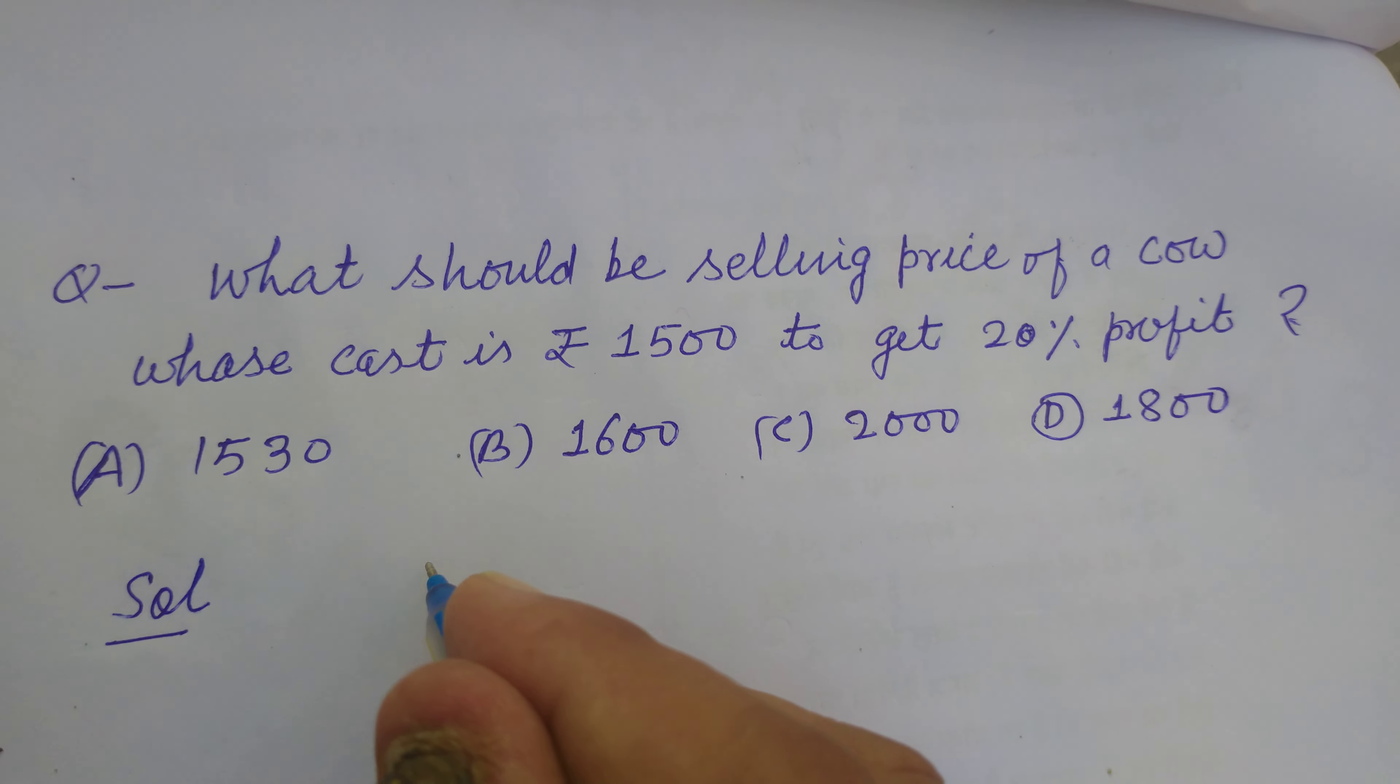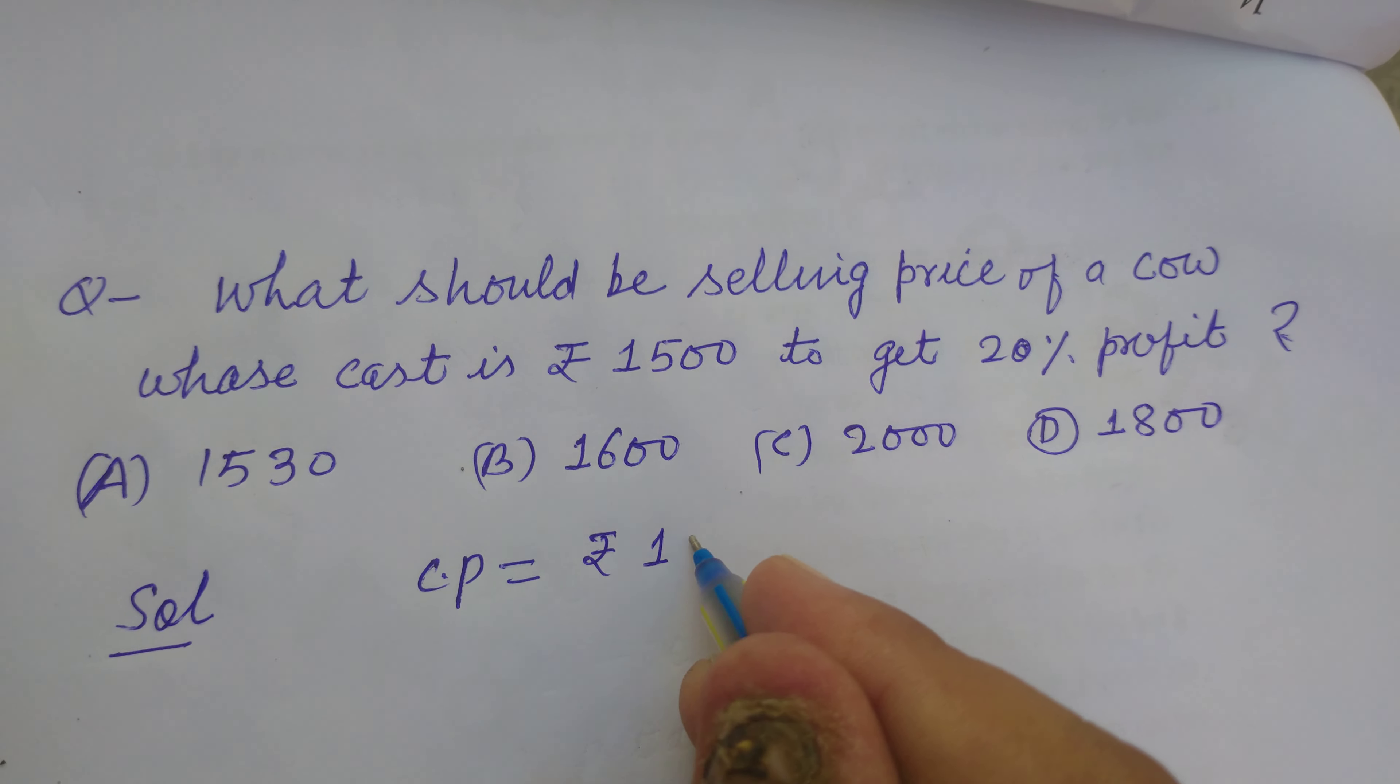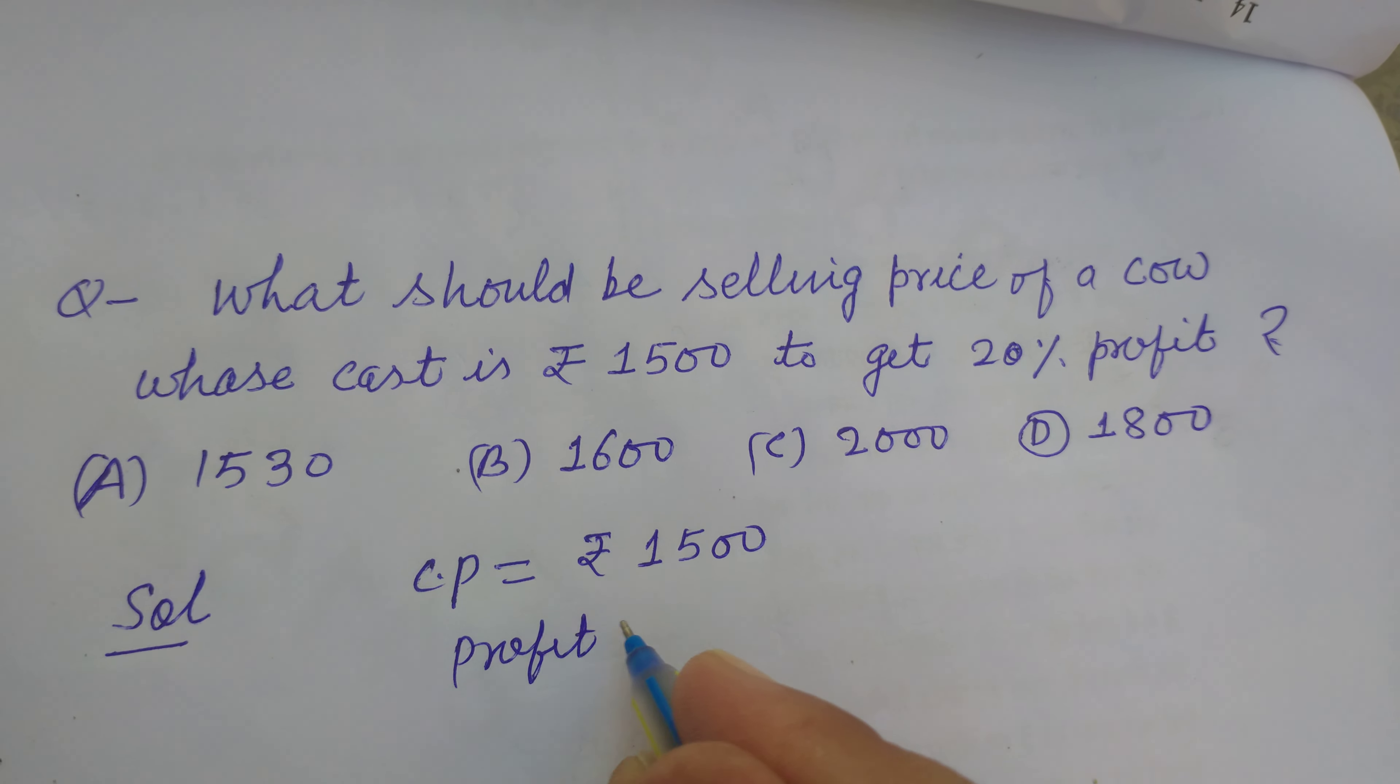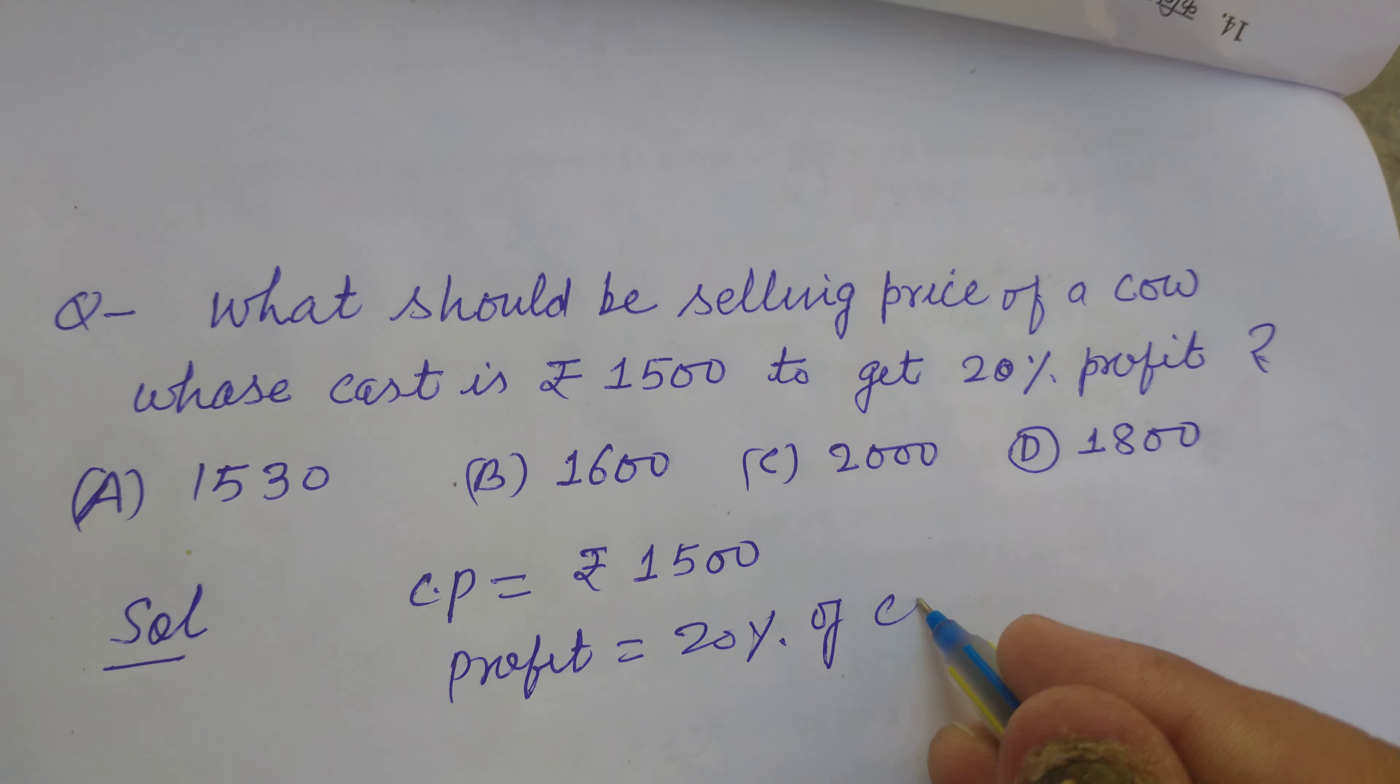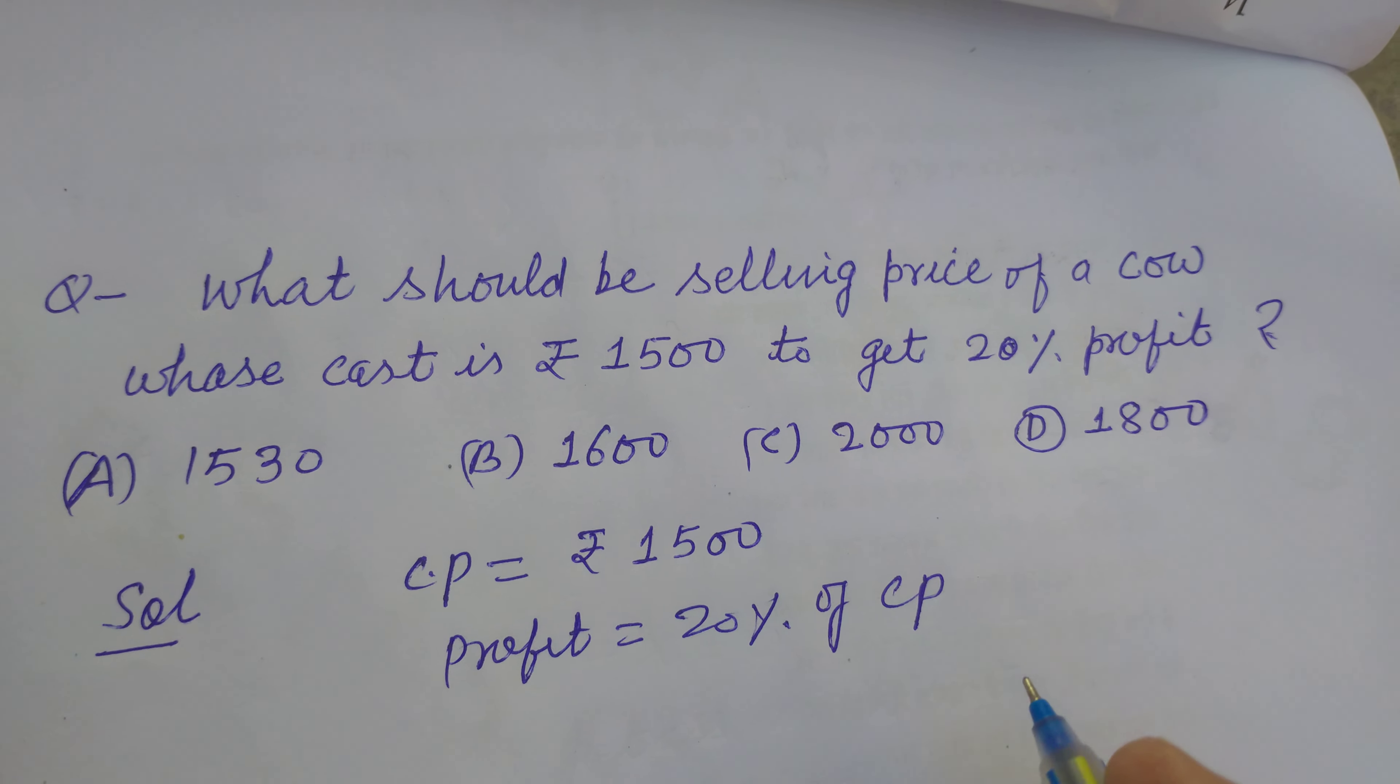So student, here cost price CP of cow is given to us which is Rs.1500 and profit is 20% of cost price. Profit and loss is always taken on cost price.